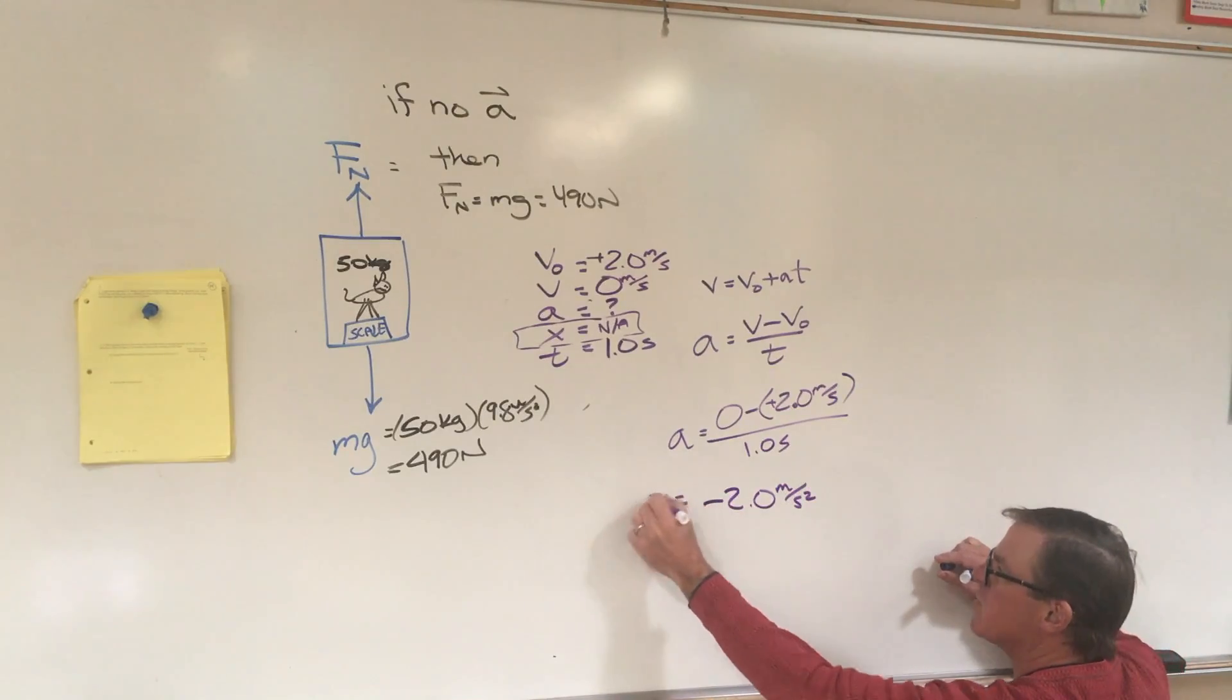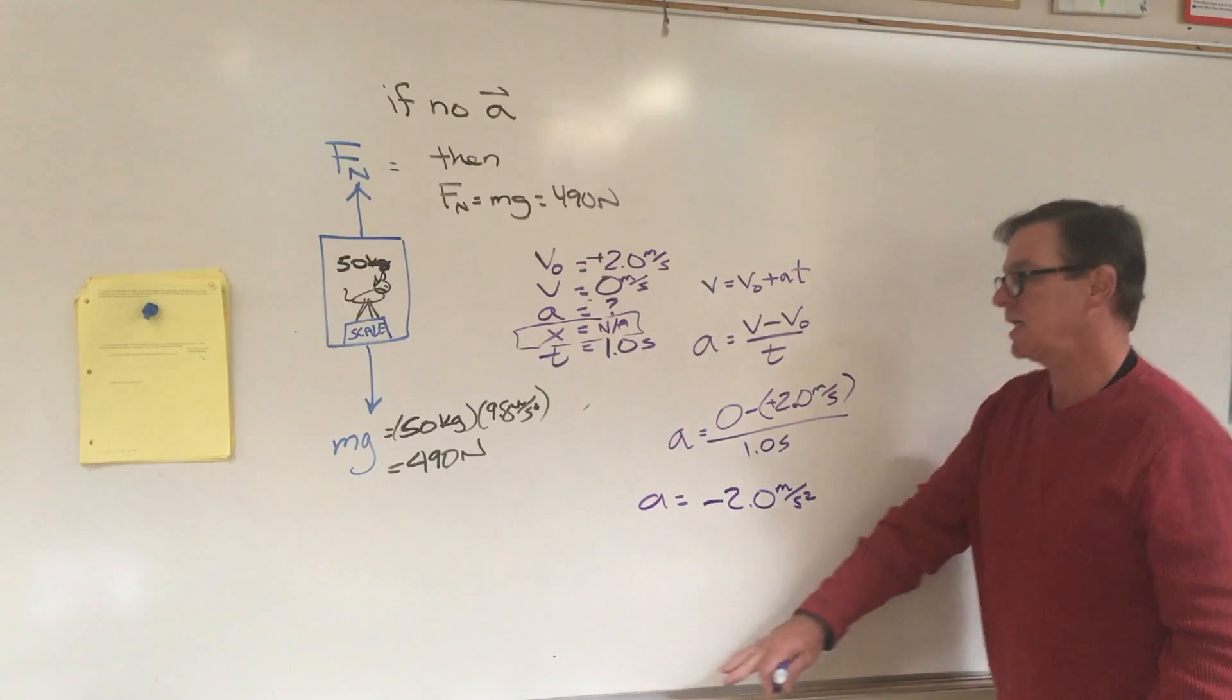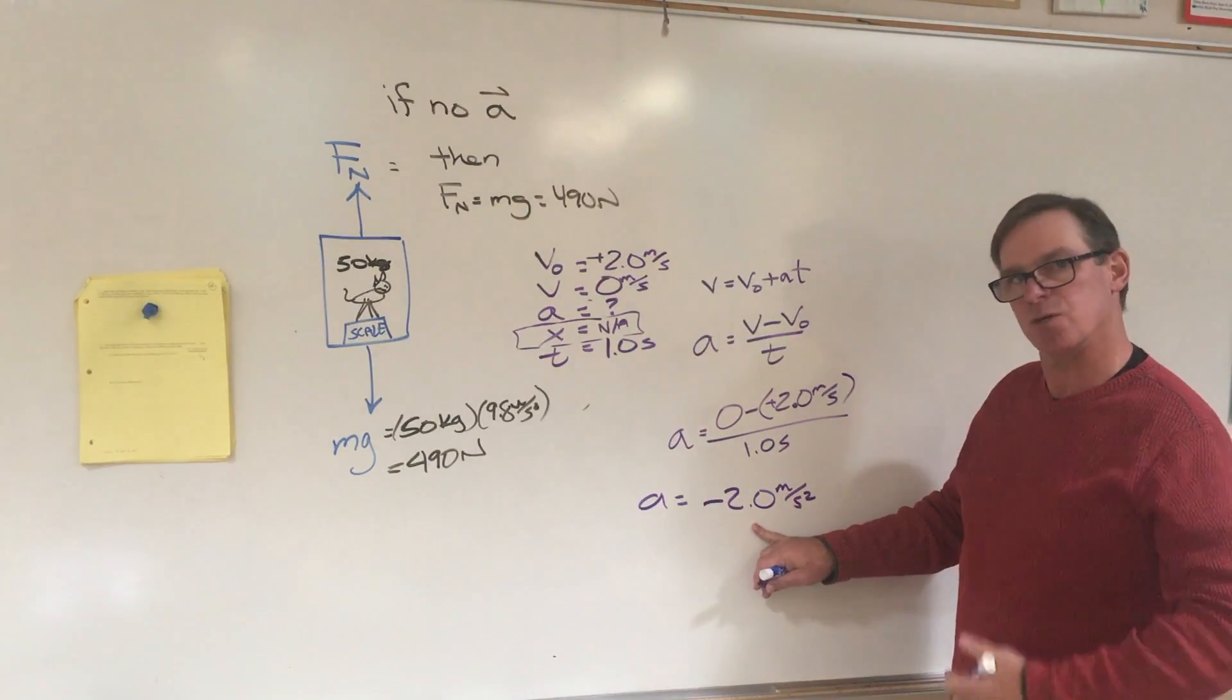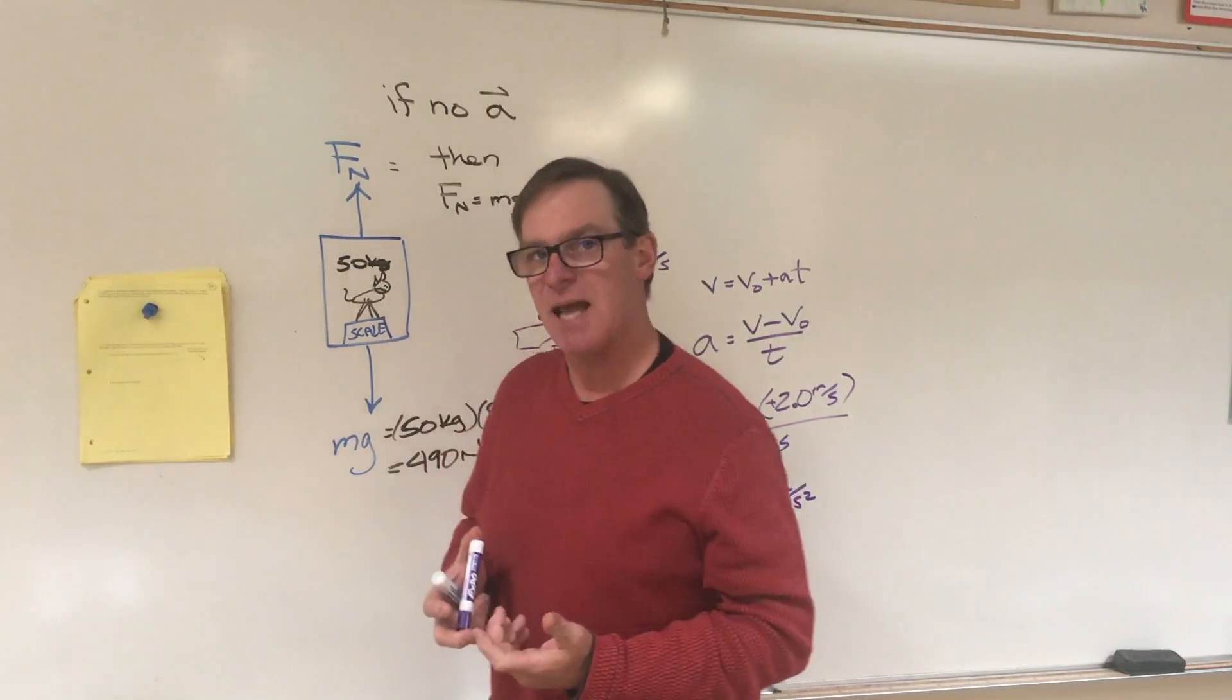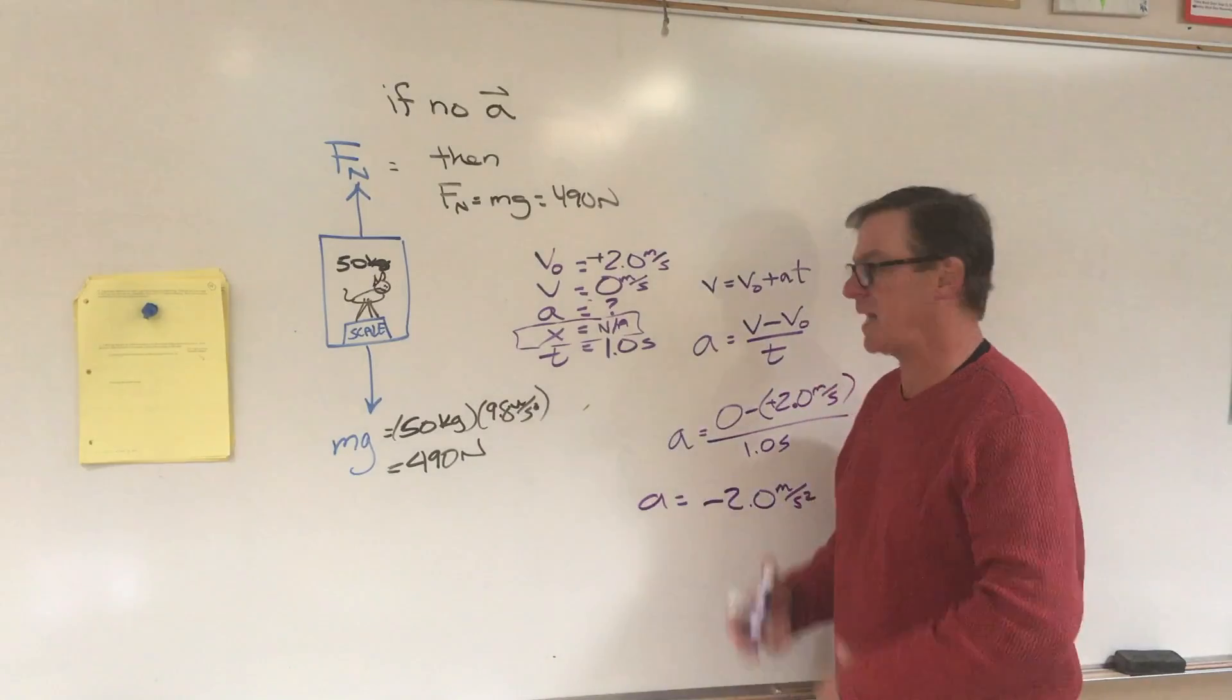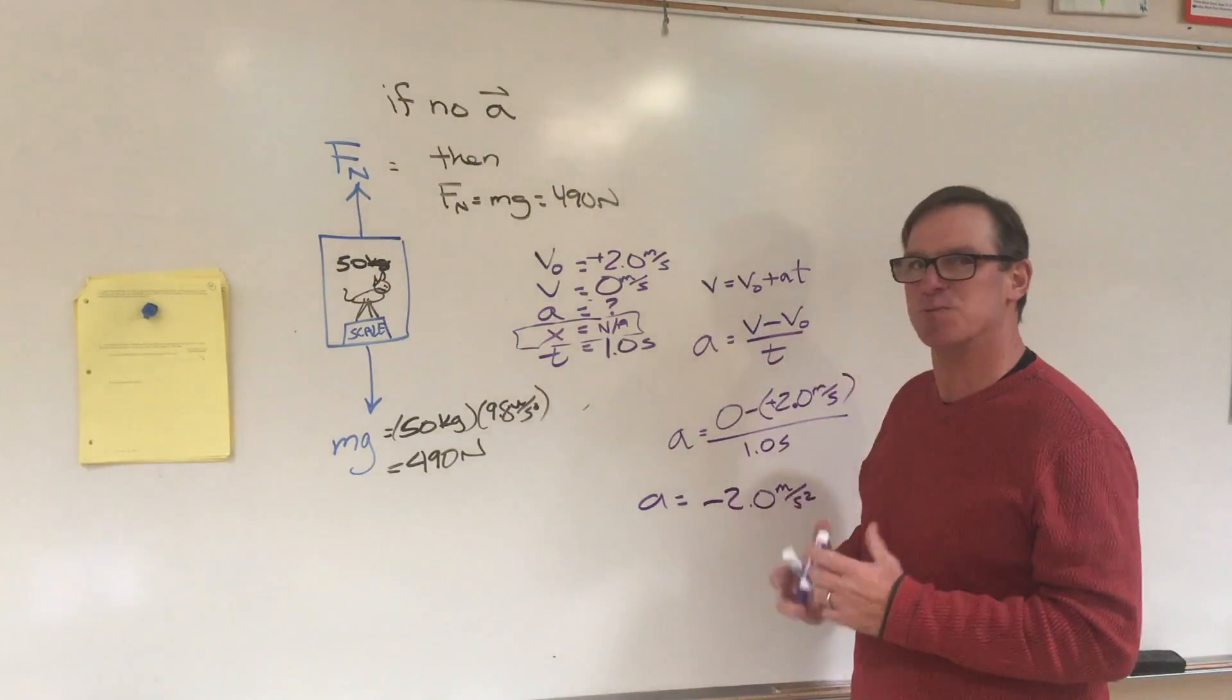So that's during the time that the dog is stopping. The elevator is coming to rest. It's going up and then it stops, and that's the rate of acceleration while it stops. But part A of the question says, what is the reading on the scale during the time the dog is traveling upward at 2 meters per second.